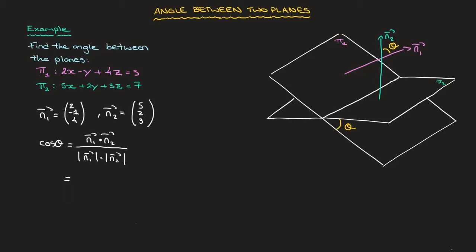we find that's equal to the dot product, which is 2×5 + (-1)×2 + 4×3. So that's 2×5 + (-1)×2, which is -2, plus 4×3, which is 12, over the magnitude of n₁.